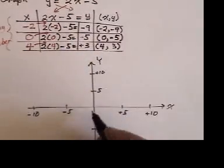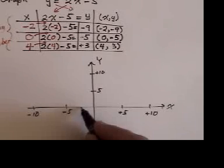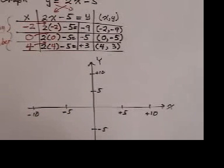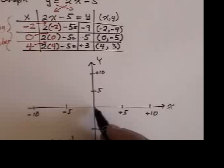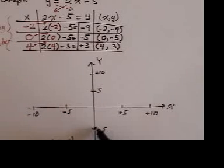So negative 2 and negative 9. I go over 2 and I drop down 9. That's this point right here. Then I go to 0 and negative 5. So I go over 0 and I drop down negative 5. So there's a point 0 and negative 5.